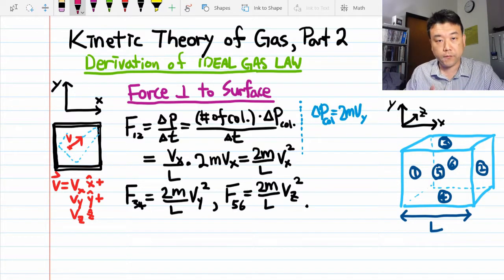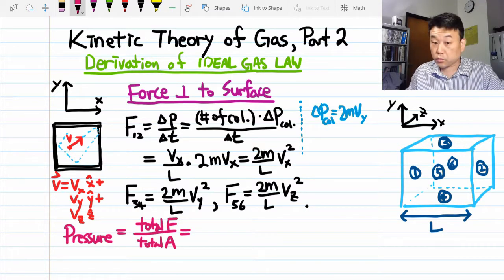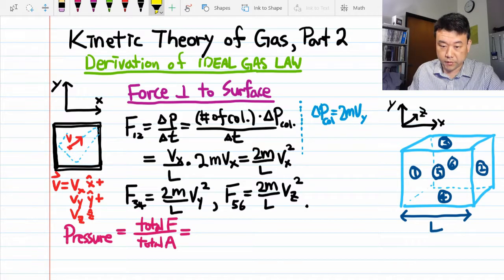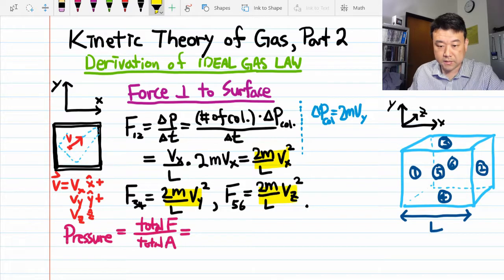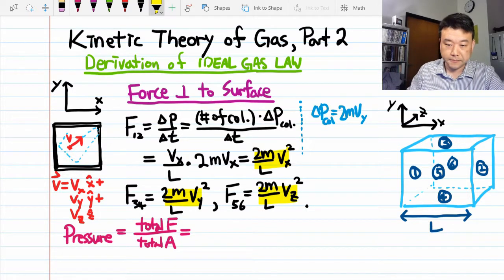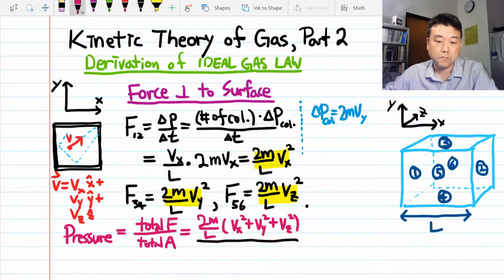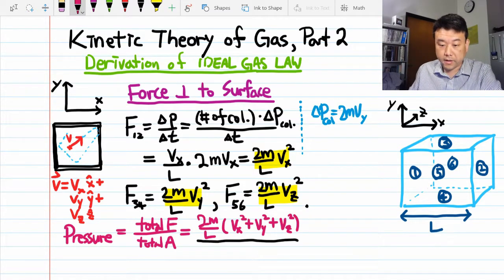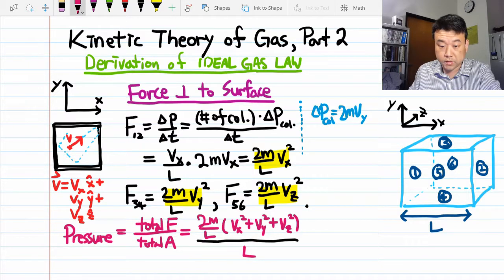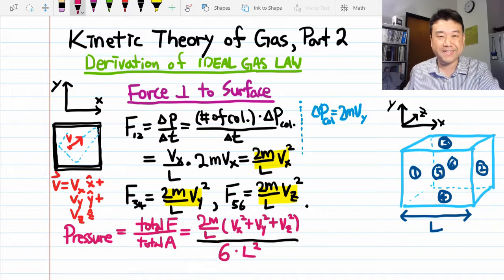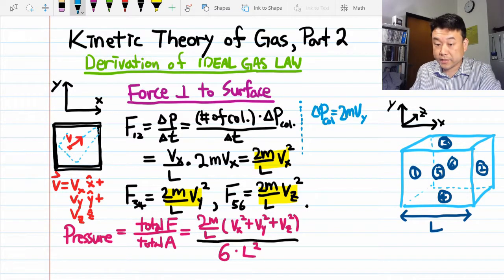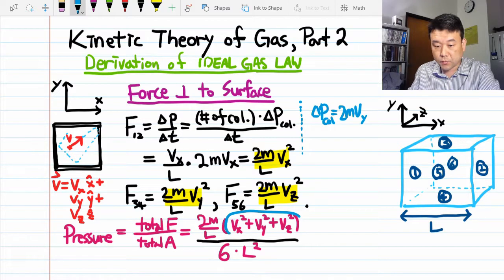So to calculate the pressure on these surfaces, we want the total force divided by the total area. For the total force, we simply add up the terms we derived for x, y, and z-axis associated surfaces, and factor out 2m over L. The total area is area of one of the square surfaces, L squared, times six since there are six faces.